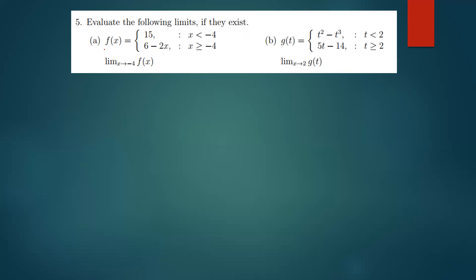These functions are piecewise functions. The way you read this is: f(x) will only be 15 for all values of x that are less than negative 4, and it will be 6 minus 2x for all values of x that are greater than or equal to negative 4. They are asking us to find the limit of f(x) as x approaches negative 4.